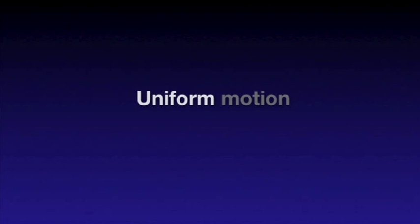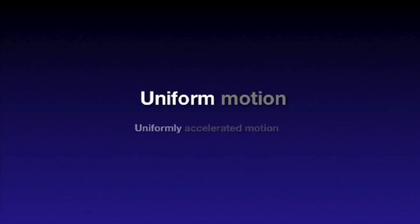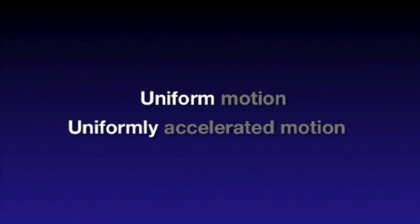Be careful to make the distinction between the words 'uniform,' as in uniform motion, and 'uniformly,' as in uniformly accelerated motion. The first — uniform — is an adjective and refers to the motion itself, whereas the second — uniformly — is an adverb and refers to the manner in which an object accelerates.